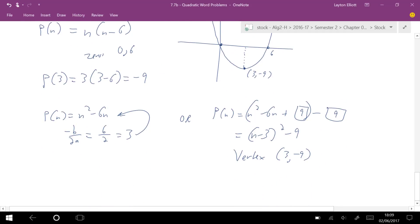So, the least product is negative 9, not produce, product. Alright, that's it.